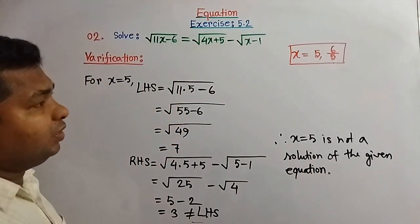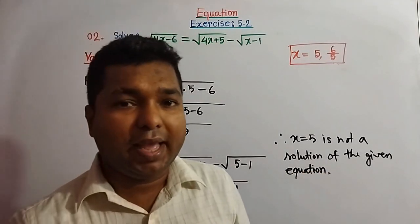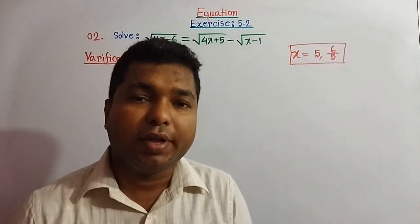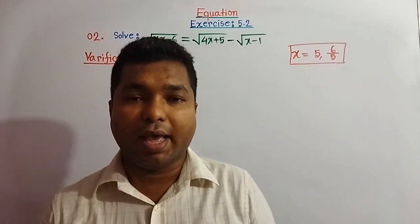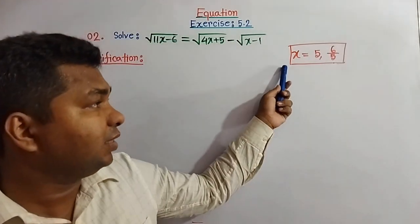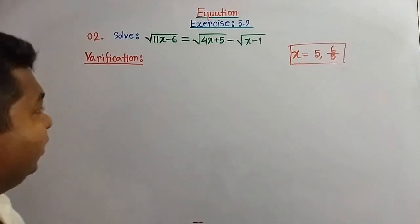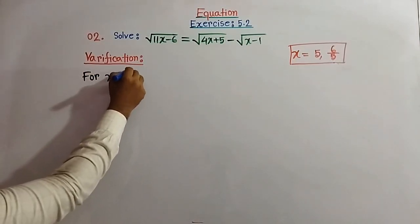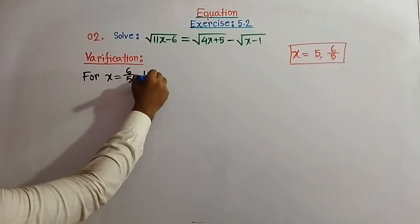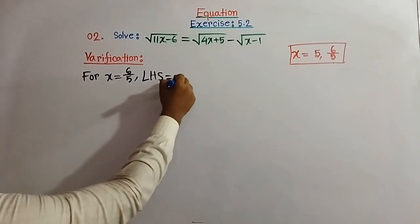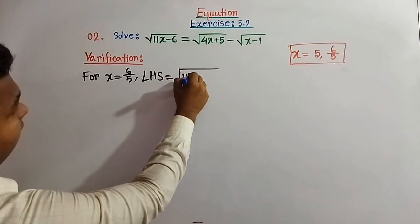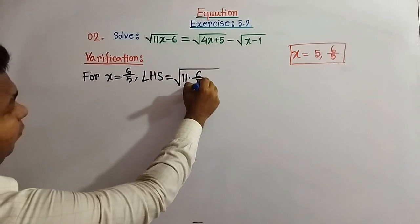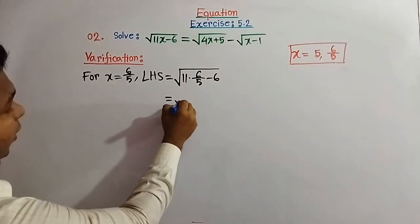Now we test the other root x equal to 6 by 5. Verification for x equal to 6 by 5: the left hand side is square root of (11 times 6 by 5 minus 6).